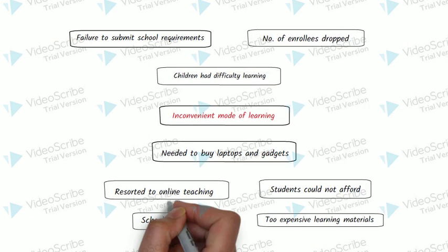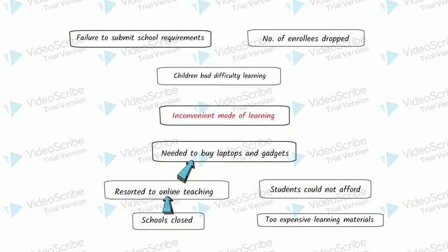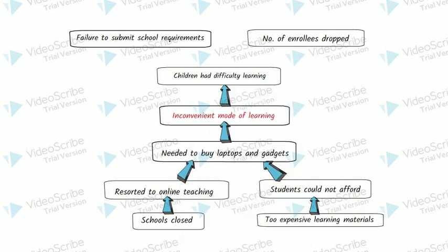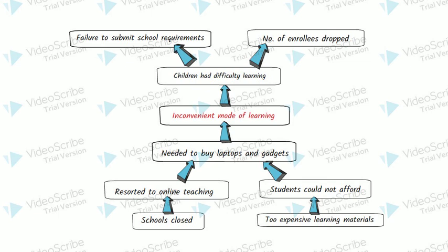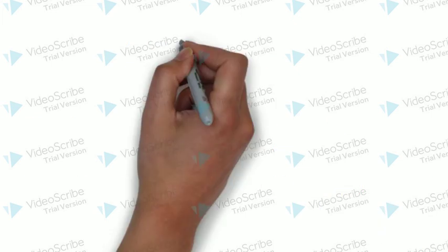This is just one example of a problem tree. We have come up with the main problem and the root causes. It is important to note that in making the problem tree, the problems gathered should be realistic and solvable. Realistic means that the problems should be current actual problems and not imagine future problems. It is also solvable so that we can come up with an appropriate solution.